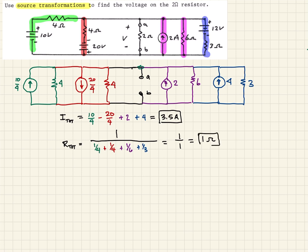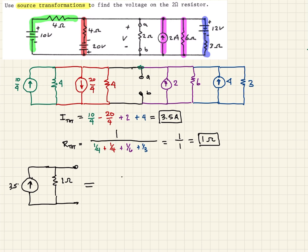Now we can redraw the circuit with a single current source of 3.5 amps going up, in parallel with a resistance of 1 ohm, connected back to our terminals. We can then transform this back — that gives us a voltage source with the plus sign up of 3.5 volts, now in series with this 1-ohm resistor. In a sense, this is our Thévenin equivalent circuit between terminals A and B.